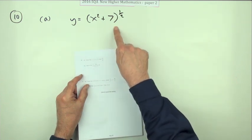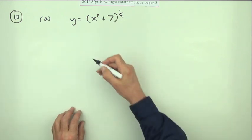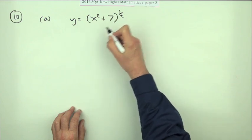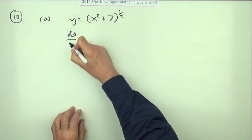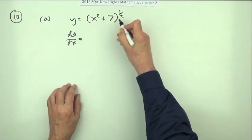So it says, given that y is equal to this, find dy by dx. So dy by dx, because it's ready to go, you've got a function of a function. You'll be using the chain rule.